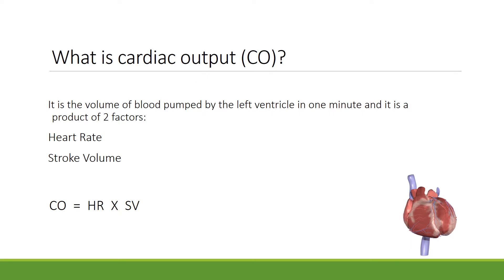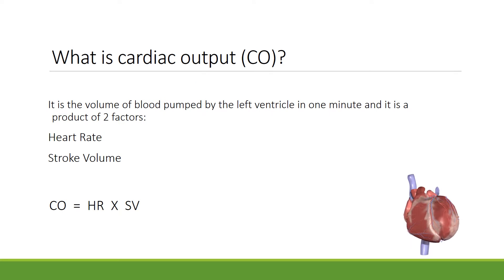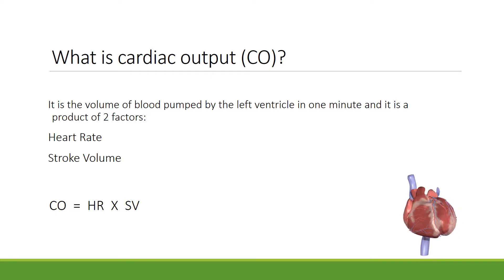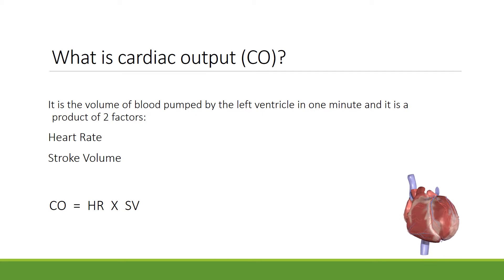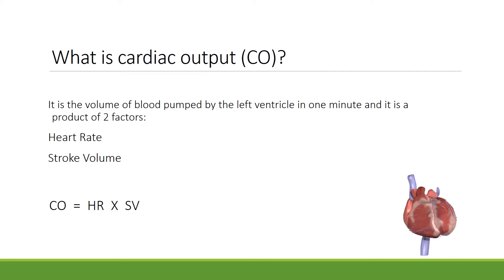Cardiac output is the volume of blood pumped by the left ventricle in one minute, and it's a product of two factors: your heart rate and your stroke volume. So the formula for cardiac output is HR times SV (stroke volume).